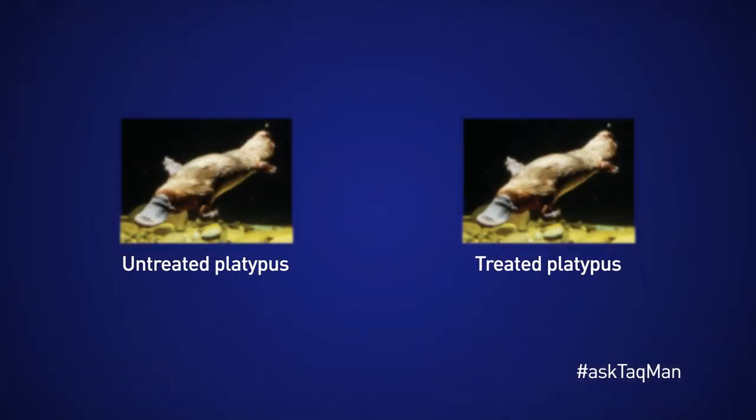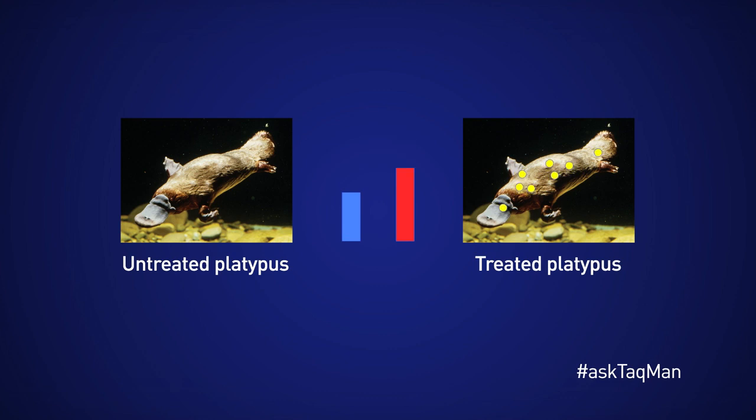Most notable on the list is looking at relative expression levels of gene targets. Users compare two or more samples — say cells from untreated and treated animals — in order to determine if and how much the expression of their gene of interest is changing.